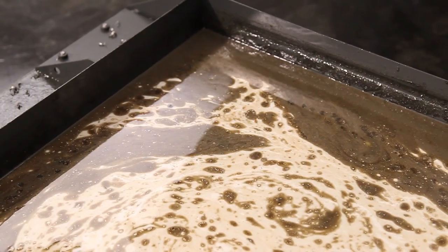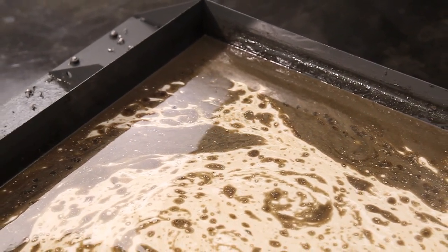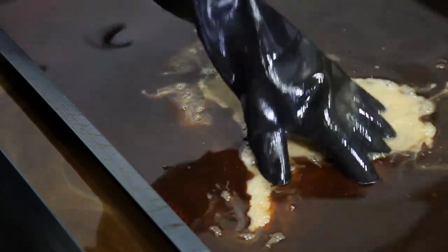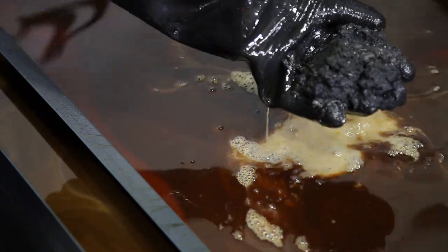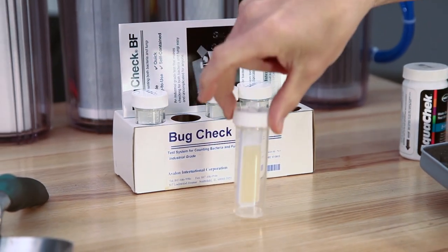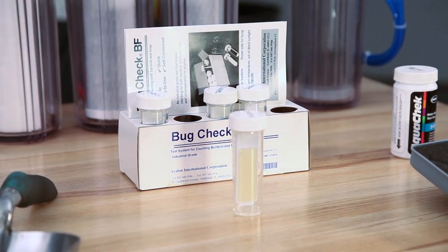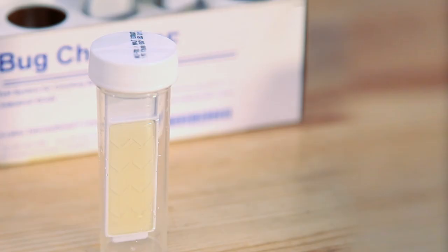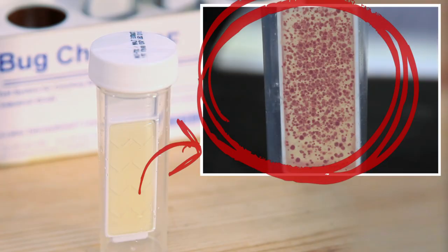However, in the unfortunate event that you've let your tank maintenance falter, you may find it turning into a stinky, disgusting mess. At this point, you may need to test for bacteria in your tank. Here, we're using a bug check bacteria test kit. Take a sample of the coolant and allow it to sit over the weekend. On Monday morning, if it looks like this, you definitely have a bacterial infection.